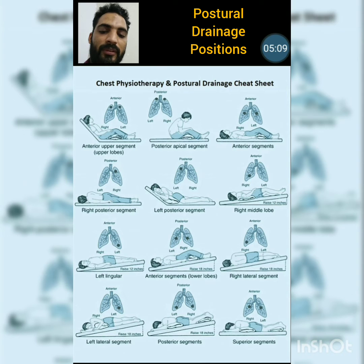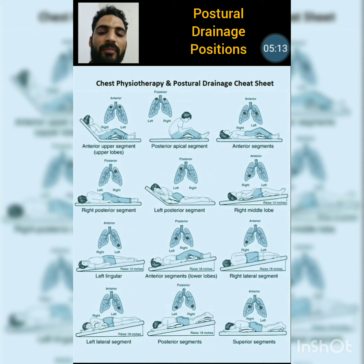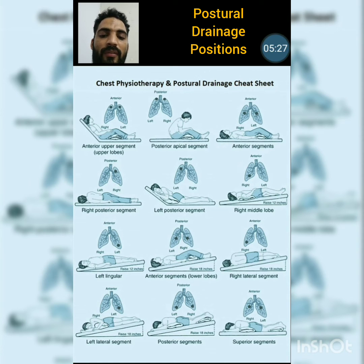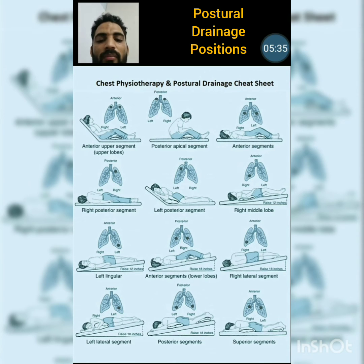The next position is used for the posterior segment. The patient is lying prone with a pillow underneath the thoracic-abdominal area. The therapist provides percussion on both sides of the lower anterior angle of the scapula. The bed is raised 18 inches towards the leg side, with a pillow or towel roll just below the chin.